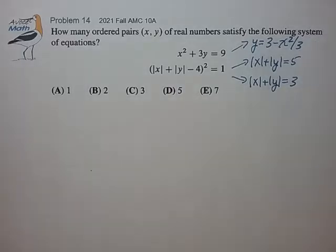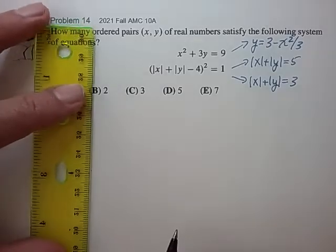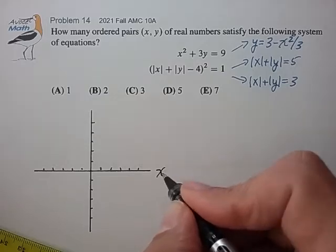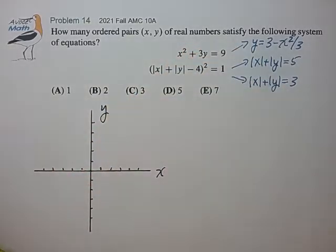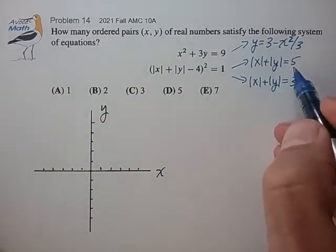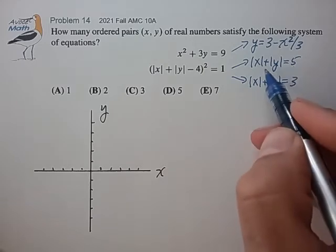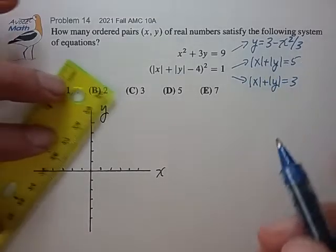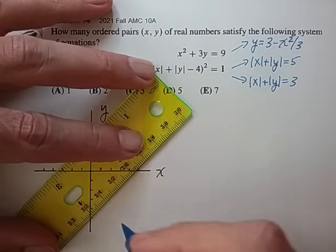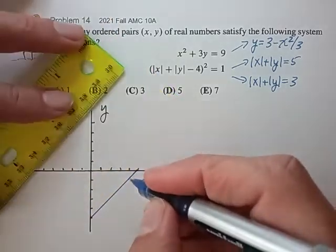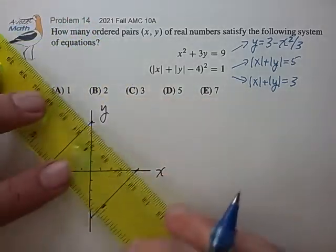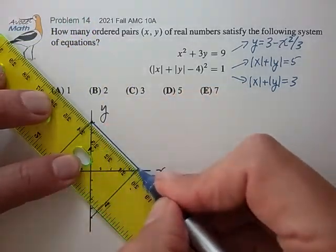So let me try to draw up a quick set of axes to help us with that. It's x, y. Now the second equation works out to be a diagonal square that intersects both axes at plus and minus 5. So that would stretch from here to here, here to here, and here to here.